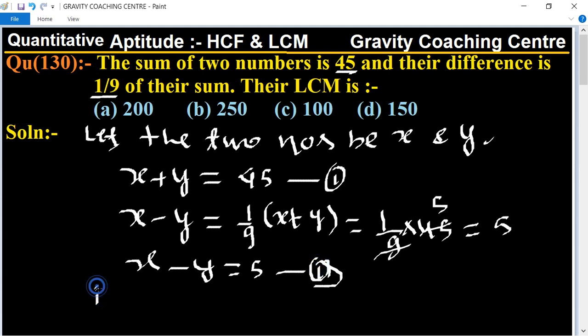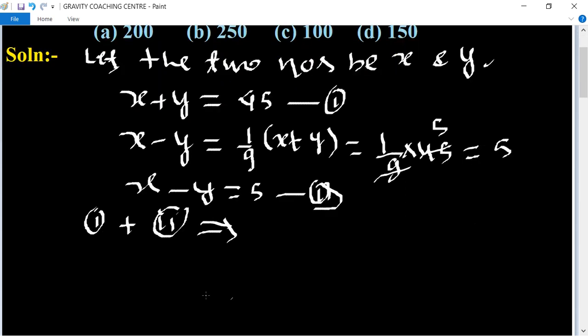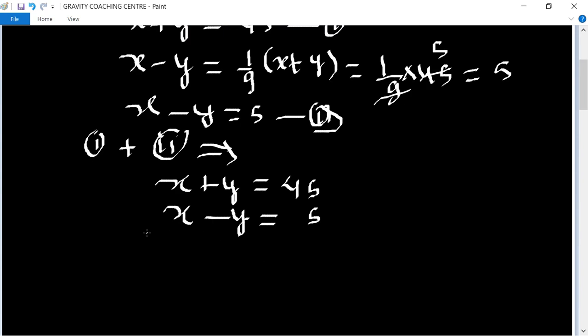And adding equations 1 and 2: x plus y equals 45 and x minus y equals 5. Then 2x equals 50, so x equals 25.